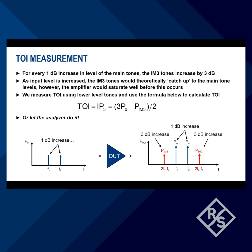The TOI is the theoretical point where the IM3 tones would reach the same level as the two main output tones. Since the amp will saturate well before this point, we measure the four tones at a level well below compression, then calculate TOI.